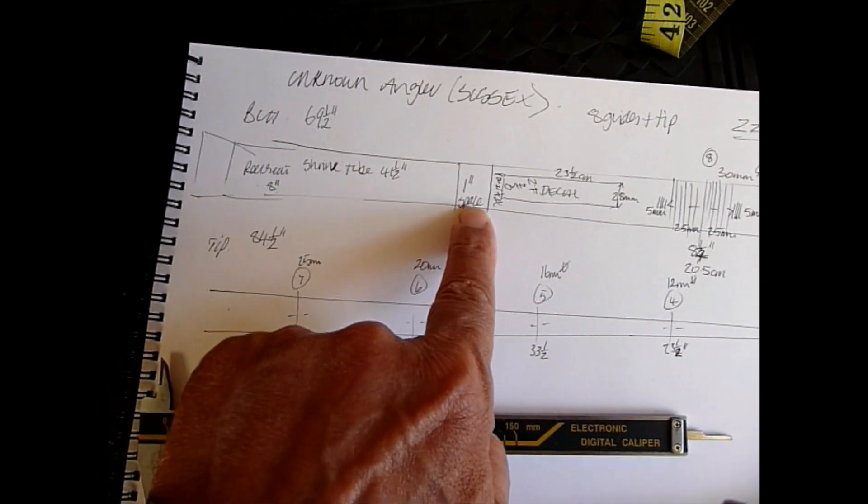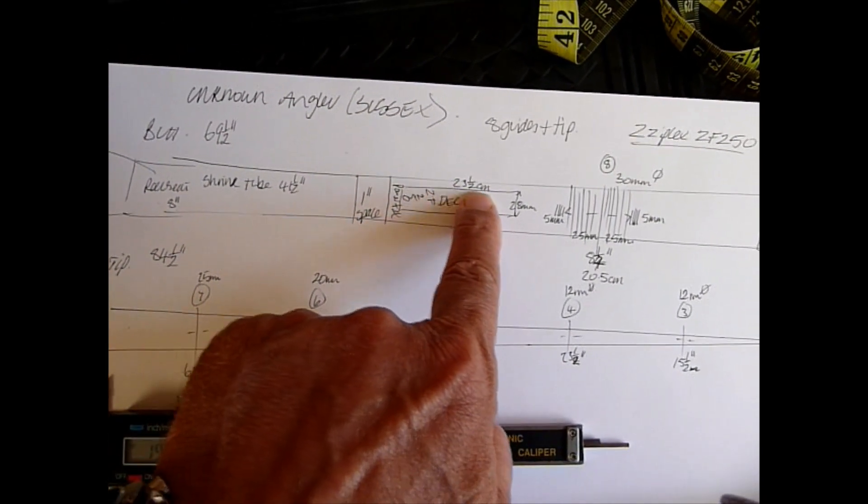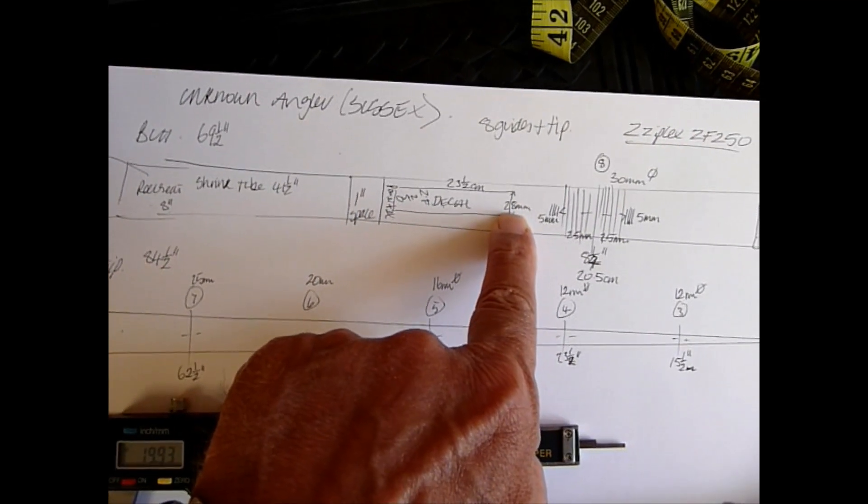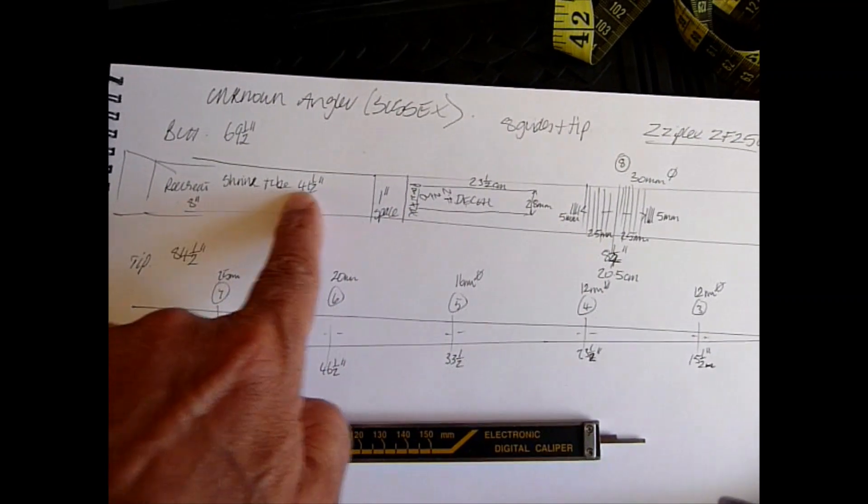There's a gap of one inch space before you get to the decal. The decal is twenty-three and a half centimeters long by twenty-eight mil wide, and we know exactly where that goes in accordance with the shrink tube.